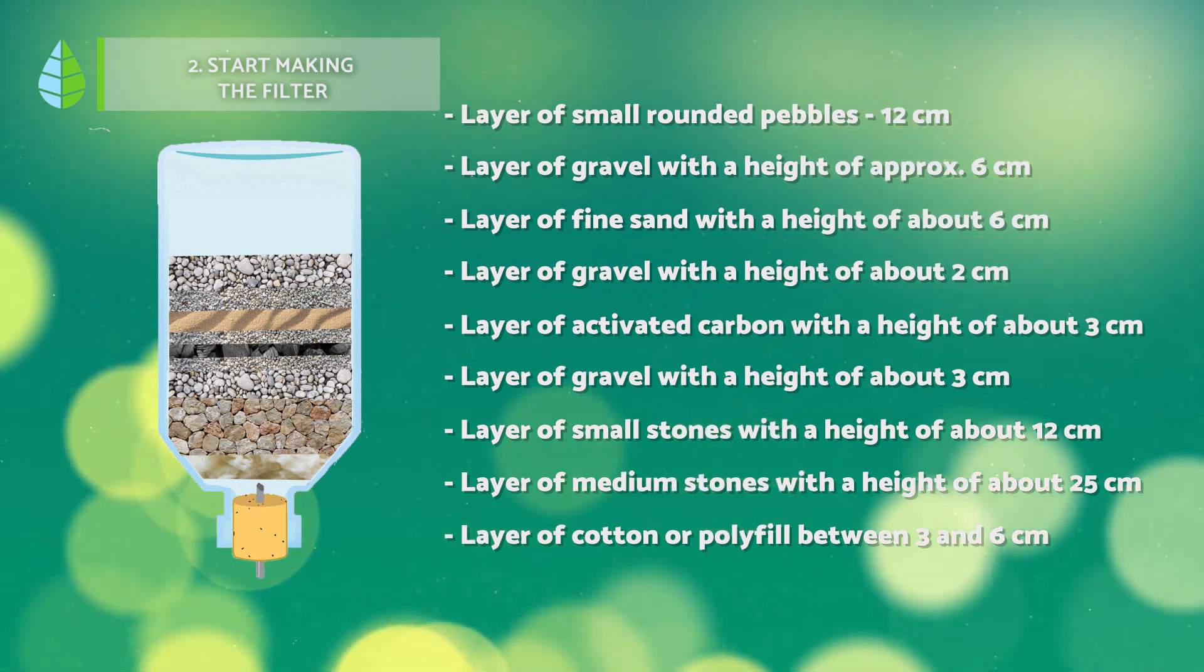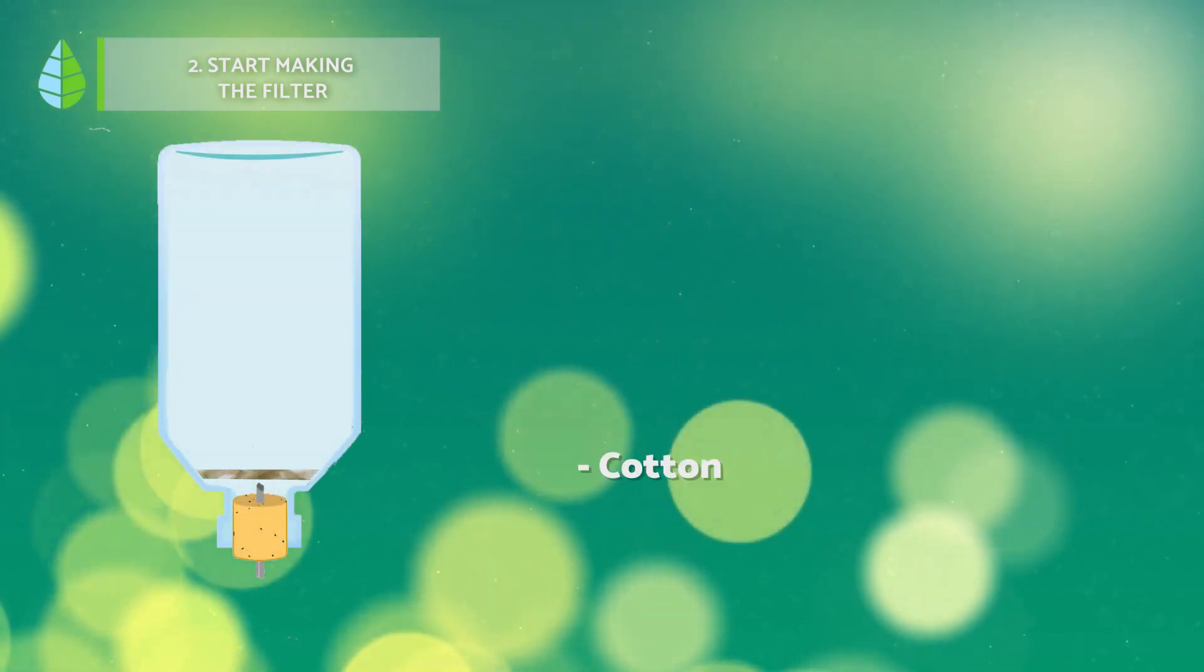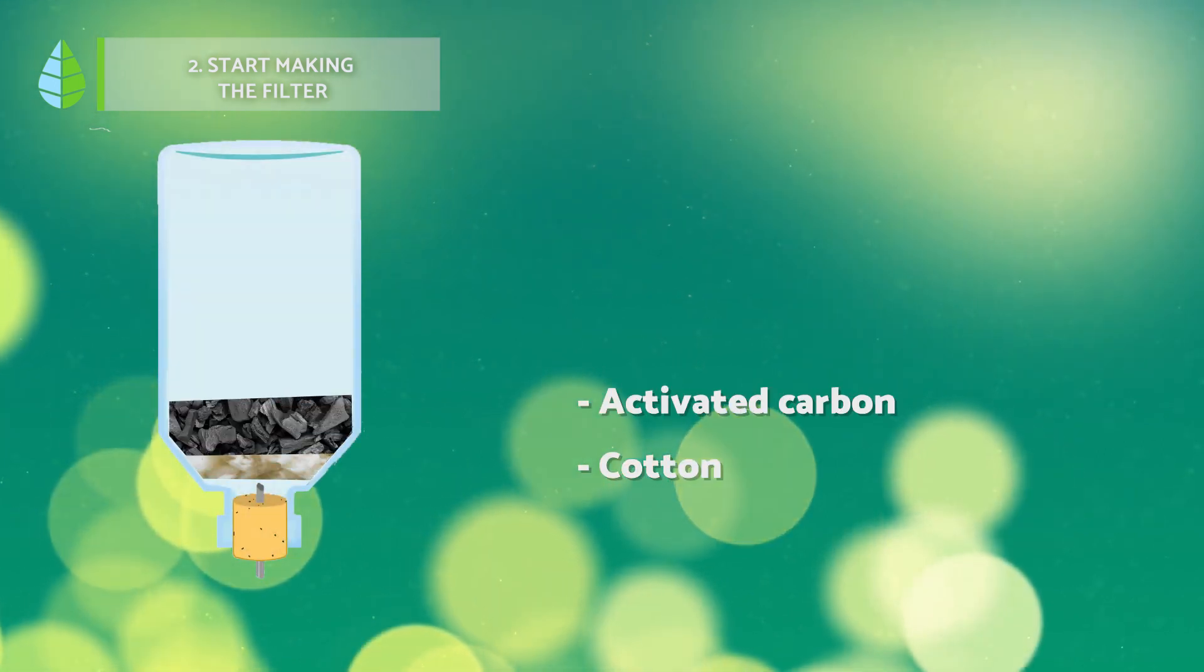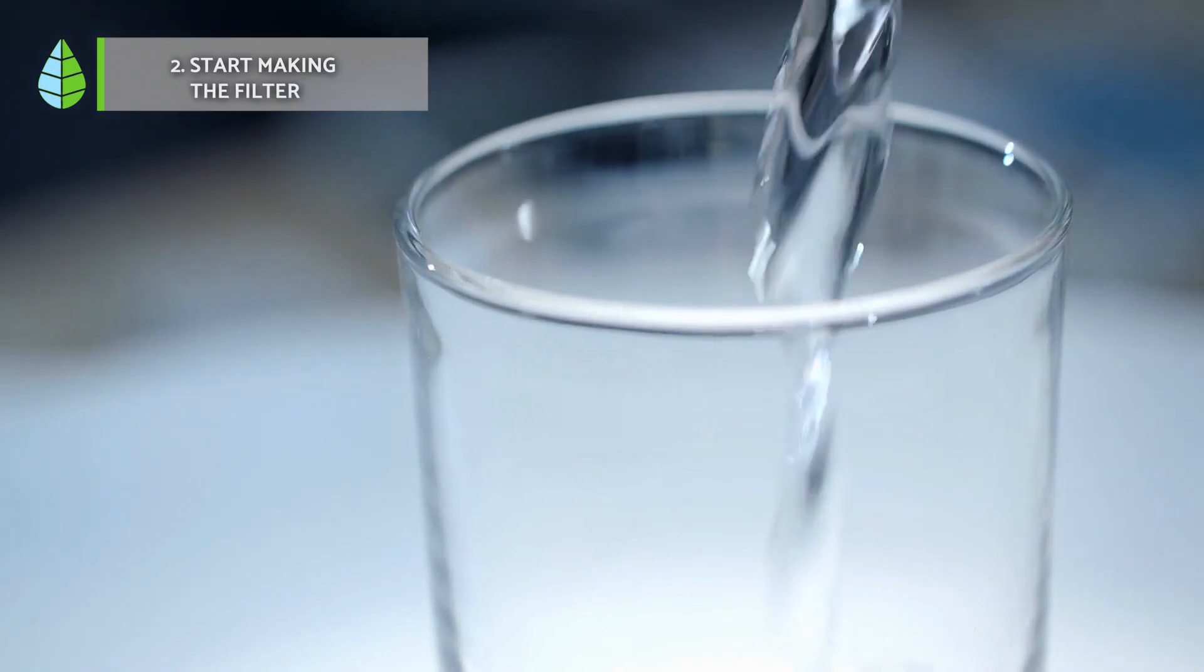And if you want to make it easier you can apply only these five layers: cotton, activated carbon, fine sand, coarse sand, medium or small stones. Then put the water on the filter and run it through the material that will catch all the particles that we want to filter.